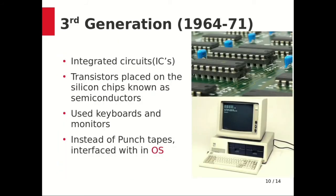The third generation starts from 1964 to 1971. In a single word, we can describe it by integrated circuits. Integrated circuits were used in third generation computers, where transistors were placed on silicon chips known as semiconductors, which increased the speed and efficiency of the computer.